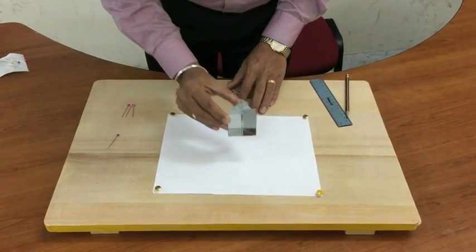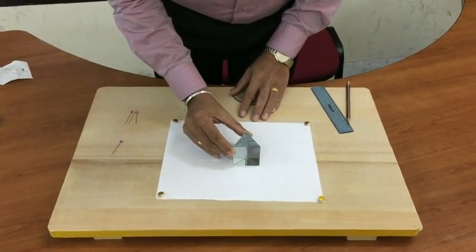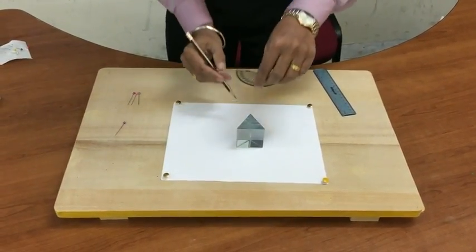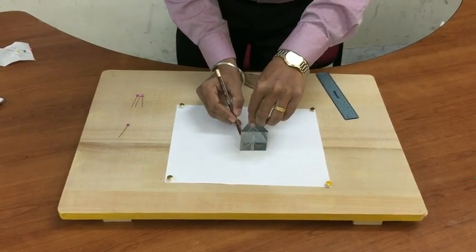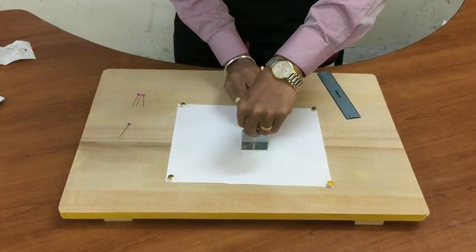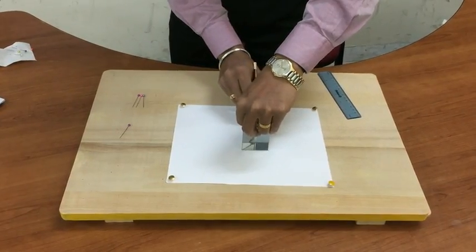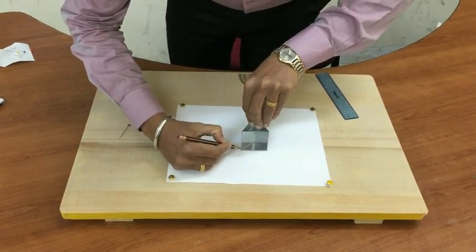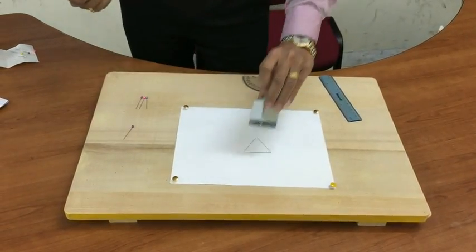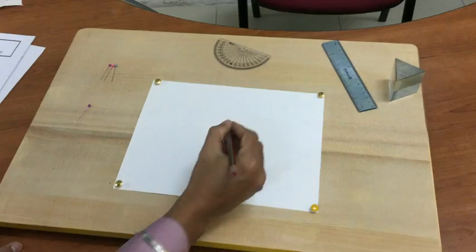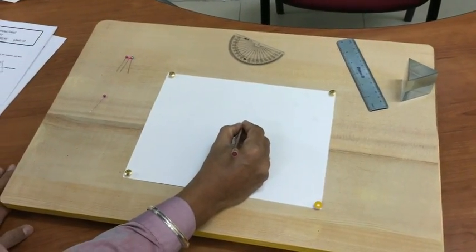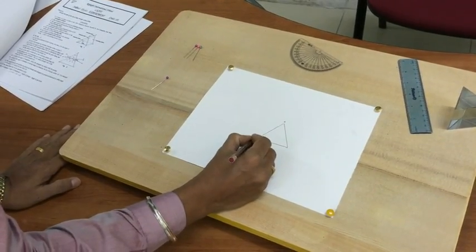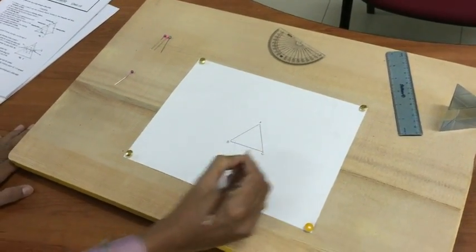Place a triangular glass prism on a white sheet of paper. Trace the boundary very carefully and remove the glass prism. Name the three vertices of this triangular glass prism as A, B, and C.